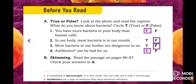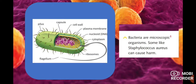Remember, if something is microscopic, that means it is very small or tiny — you can only see it with a microscope. An antibiotic is a type of medicine that stops bacterial infections. Here is an example of bacteria; bacteria are microscopic organisms.